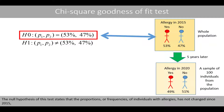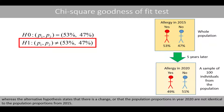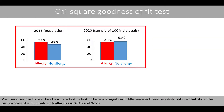The null hypothesis of this test states that the proportions of individuals with allergies has not changed since 2015, whereas the alternative hypothesis states that there is a change, or that the population proportions in the year 2020 are not identical to the population proportions from 2015. We therefore like to use a chi-square goodness of fit test to test if there is a significant difference in these two distributions showing the proportions of individuals with allergies in 2015 and 2020.